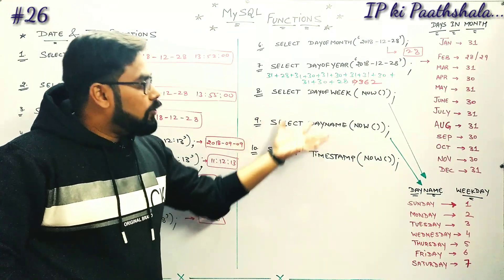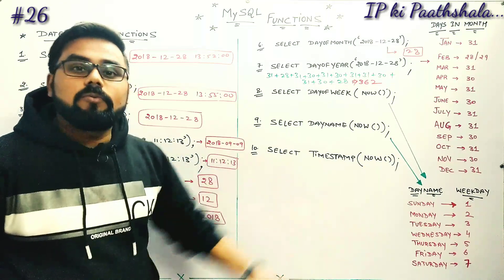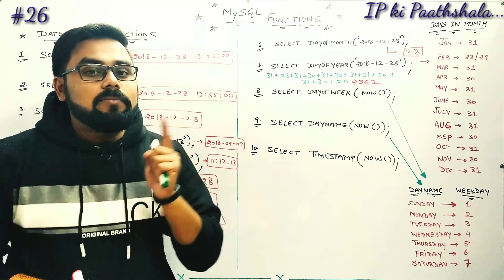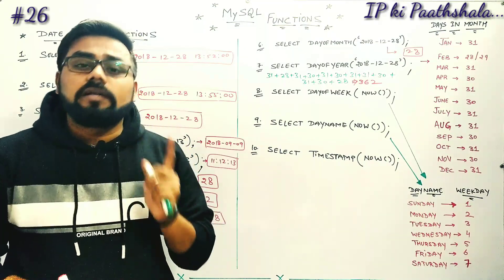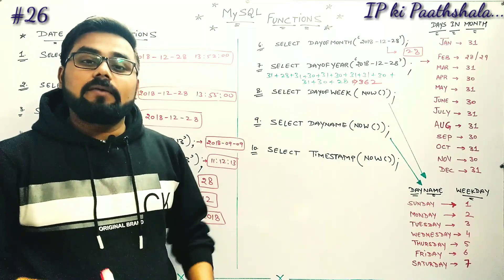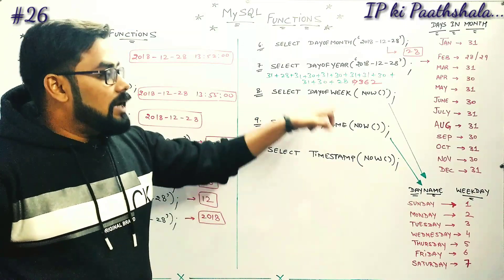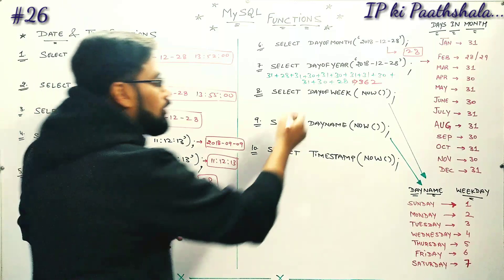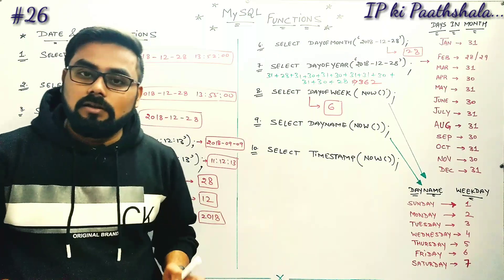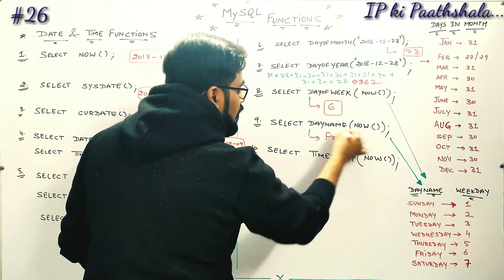Next, we have two important functions: DAYOFWEEK() and DAYNAME(). For DAYOFWEEK(), the counting starts from Sunday — the first day of the week is always Sunday. For example, today is Friday, which is indirectly the sixth day of the week. DAYOFWEEK() returns a numeric answer between 1 to 7. So today's answer for Friday is 6. For DAYNAME() with NOW(), today's particular day name is Friday.